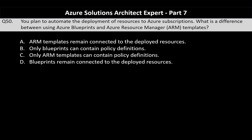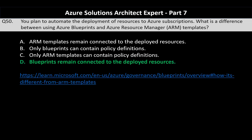Question number 50 of the series. You plan to automate the deployment of resources to an Azure subscription. What is the difference between using Azure Blueprints and Azure Resource Manager templates? The correct answer is that blueprints remain connected to the deployed resources. The blueprint preserves the relationship between the deployed application and the blueprint components, whereas with ARM templates there remains no active relationship between your deployed application and the template. This connection in blueprints helps in tracking and auditing the resources. Refer to the link on screen to understand more about the differences between ARM templates and blueprints.